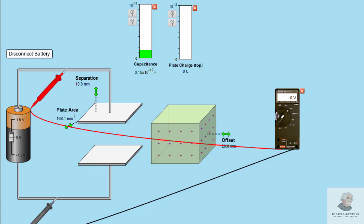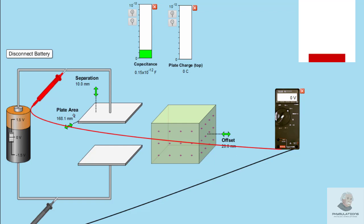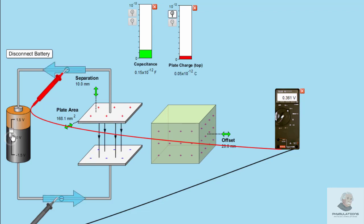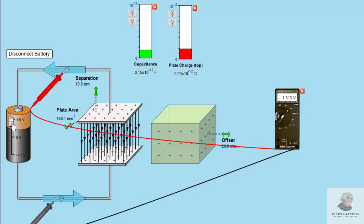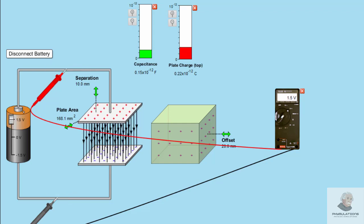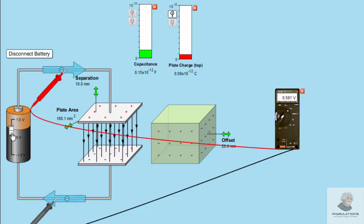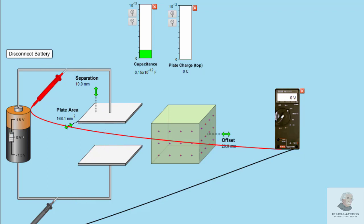Let's start with the basic idea of how a capacitor is charged. Here I have connected a voltmeter across the plates of a capacitor, a battery, plates having plate area, a separation, and I have also placed a dielectric medium. When we increase the voltage of the battery, the capacitor gets charged and electrons transfer from one plate to another. If we decrease the voltage, the capacitor is neutralized and we bring the voltage back to zero.